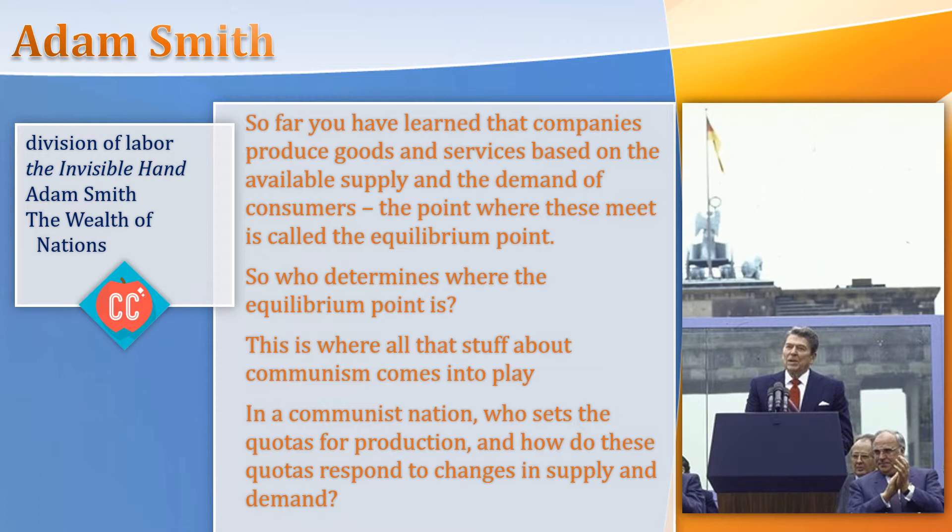So far, you have learned that companies produce goods and services based on the available supply of raw materials, labor, capital, and so forth, as well as on the demand of the consumer. Remember that the producer can manufacture a product or provide a service that meets already existing demand, or they can produce a good or service and create their own market. The point where supply and demand meet is the equilibrium point.